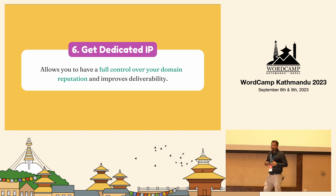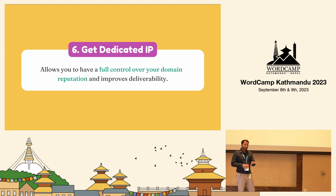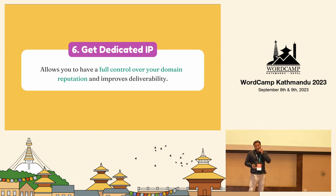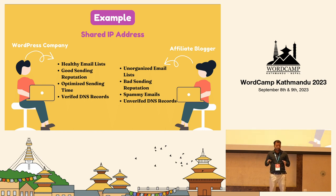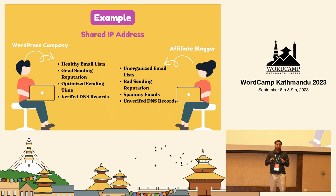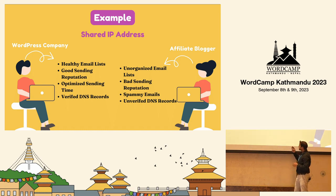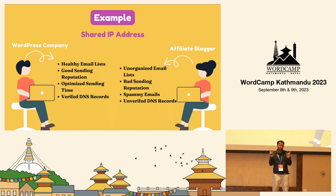If you are really serious about email marketing, this is something you should definitely consider — it's costly, but it is a game changer for email marketers. Get a dedicated IP. Why is a dedicated IP very important? Here's an example of running your campaign on a shared IP. Let's suppose there are two entities: a WordPress company and an affiliate blogger, and they are running their email campaign for Black Friday from the same email service provider on a shared IP. That basically means if these two people send an email campaign, they are going to be from the same IP address.